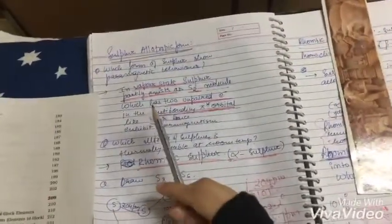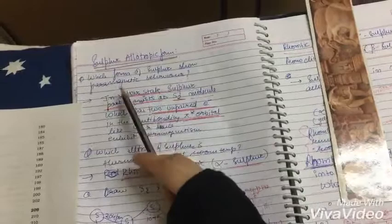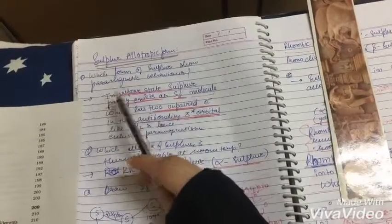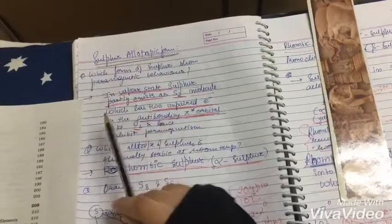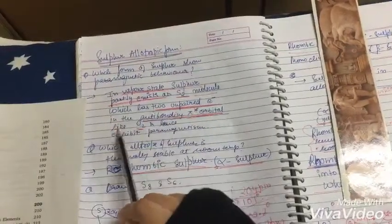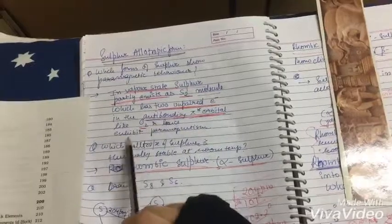So, sulfur in allotropic forms, which form of sulfur show paramagnetic behavior? In vapor state, sulfur partially exists as S2 molecule which has two unpaired electrons in the antibonding pi orbital like oxygen and hence exhibit paramagnetism.